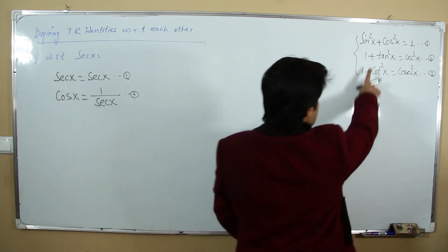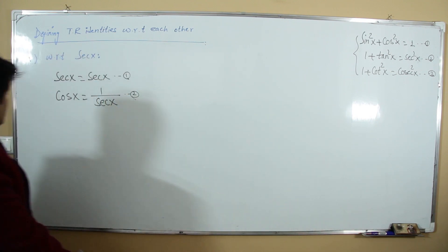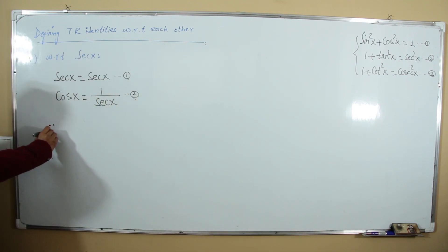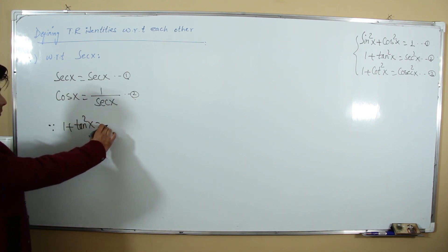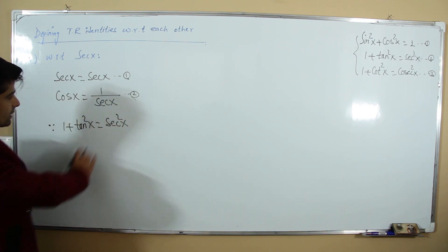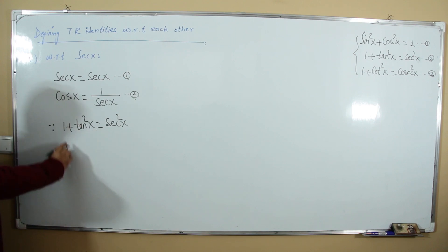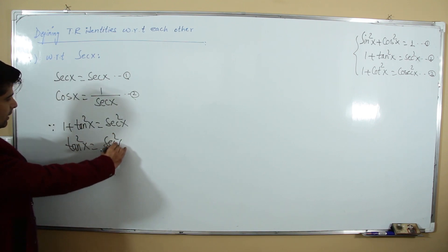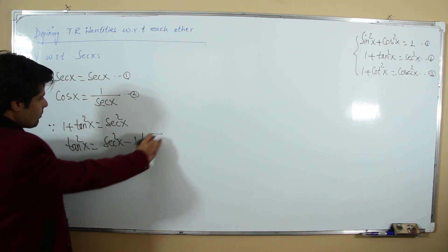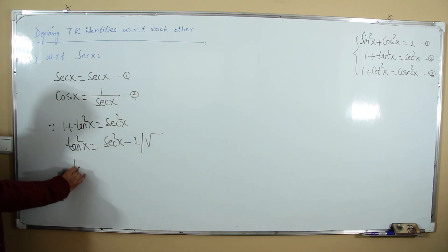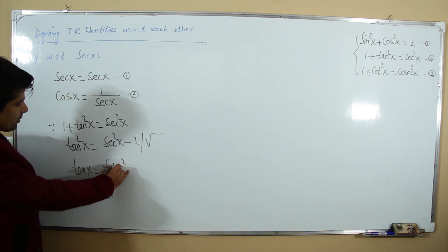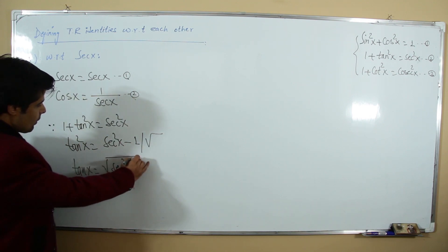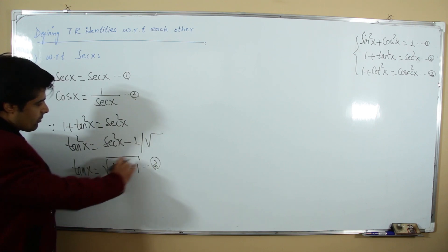Use the second identity: 1 + tan²x = sec²x. Solving for tangent: tan²x = sec²x - 1, so tan x = √(sec²x - 1). This is our third relation.